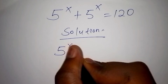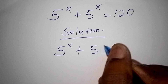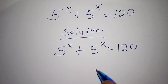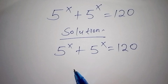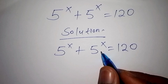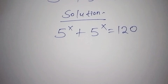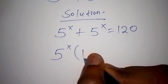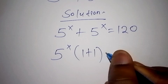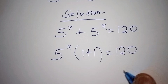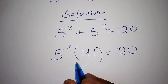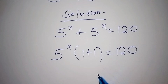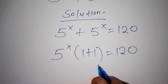We have 5 to the power of x plus 5 to the power of x equals 120. As you can see, 5 to the power of x is common in both terms, so let us factorize. We can write it in a shorter form. We can expand this and still end up with 5 to the power of x plus 5 to the power of x, so let us proceed.